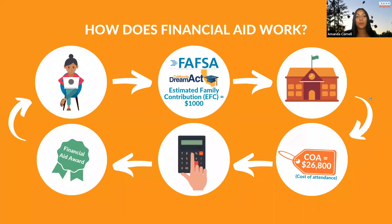How does financial aid work? First, you fill out the application — either the FAFSA or the California Dream Act — which generates an EFC (Estimated Family Contribution). That information is sent to the school. After that, the school generates a cost of attendance for you, which is then calculated with your grants and everything else you receive from the financial aid application, and you receive a financial aid award.